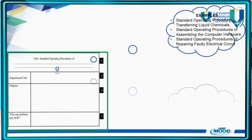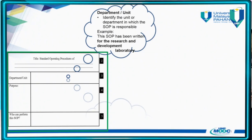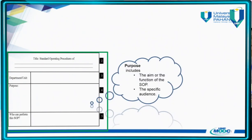The department or unit section identifies the department or unit which is responsible for the SOP — where the SOP is written for. It would be better if you use the same structure of language, such as: 'This SOP has been written for which department.' The purpose section states the objective or aim of the SOP — how do you write that?